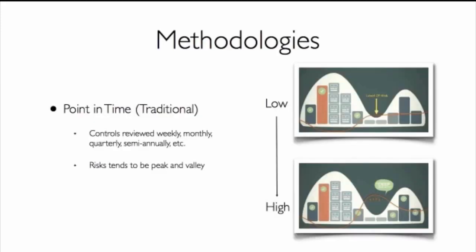Moving on to methodologies — there are different ways to measure compliance. The Garland Group offers what they call a traditional methodology: at a point in time, you spend a couple of days or weeks on site determining your level of compliance with a framework or regulation. The problem with this approach is that organizations ramp up before examiners or auditors arrive — putting all controls in place and gathering documentation — but after the review team leaves, risk tends to return to its previously elevated state.